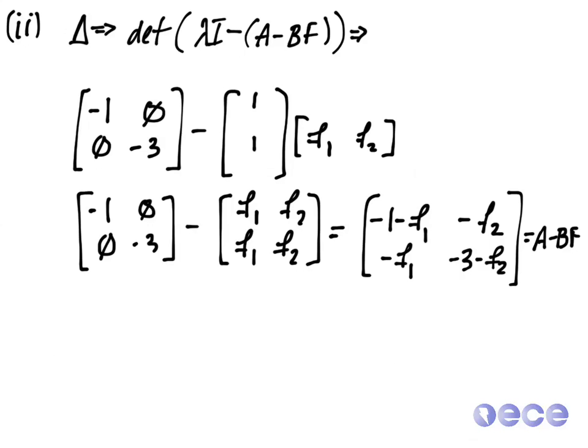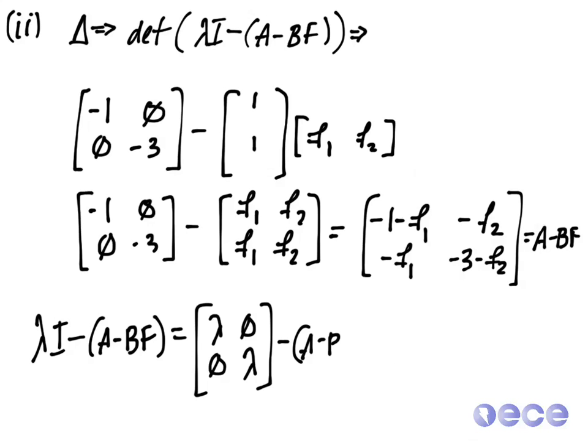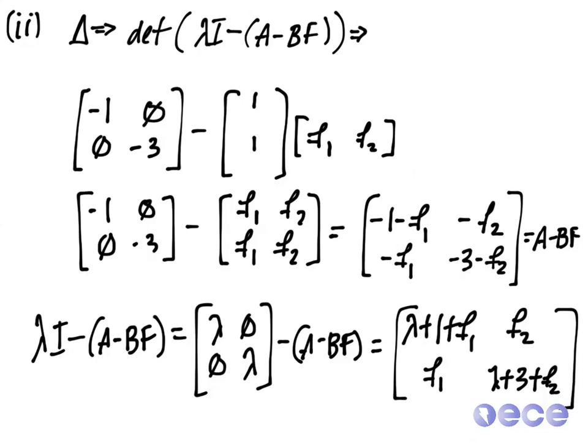So I want to subtract this away from lambda I. So lambda I minus A minus BF will be equal to lambda, lambda, 0, 0, minus A minus BF, which we have above. So this equation, or this matrix, will now be lambda plus 1 plus f1, and then f2, plus f1 here, and then lambda plus 3 plus f2.